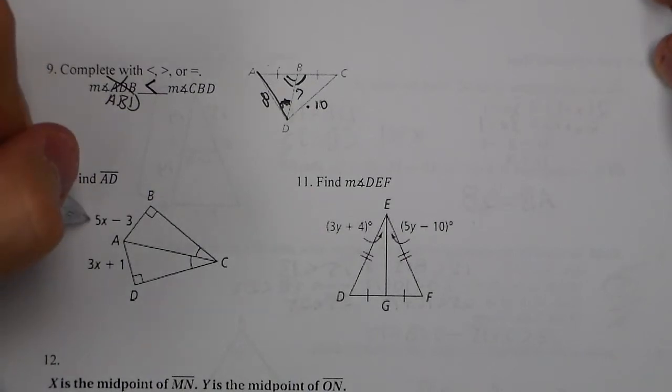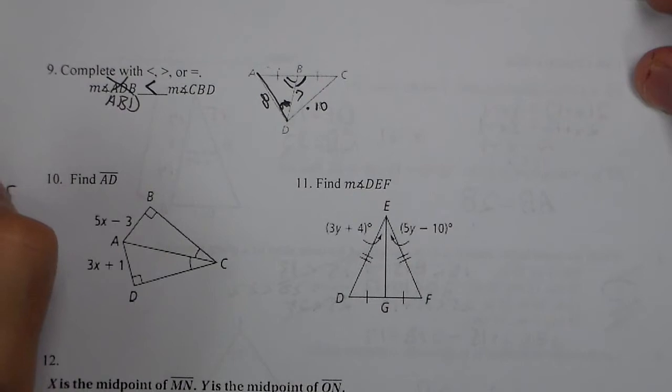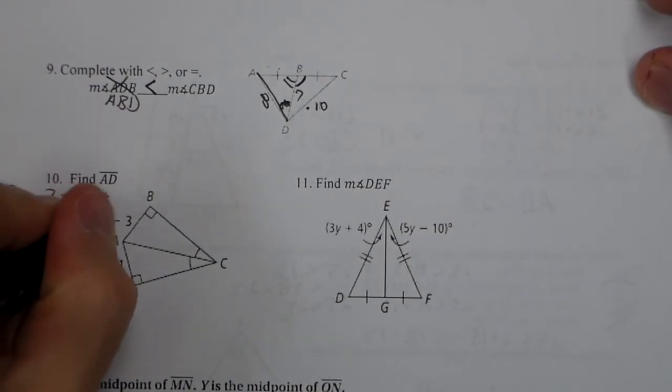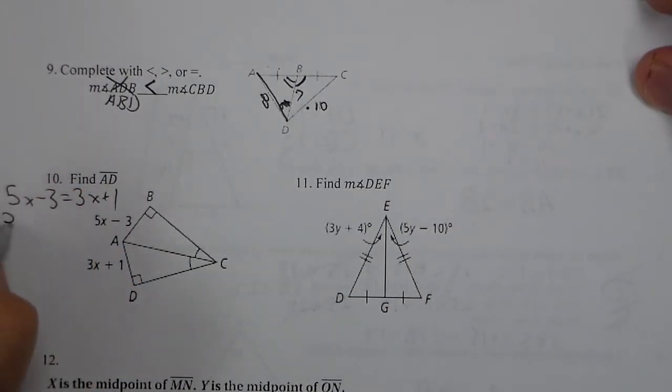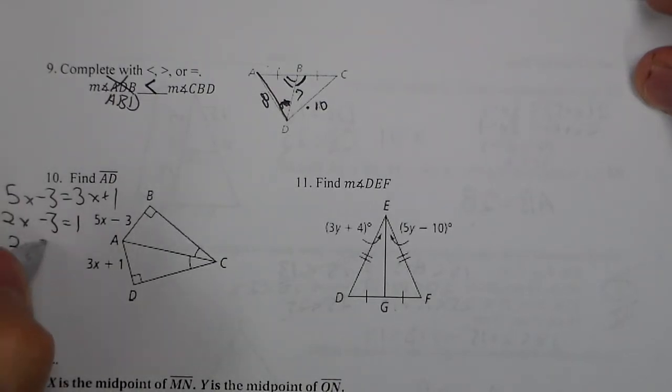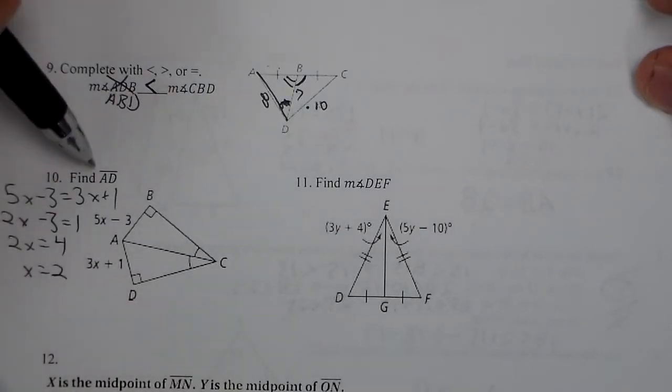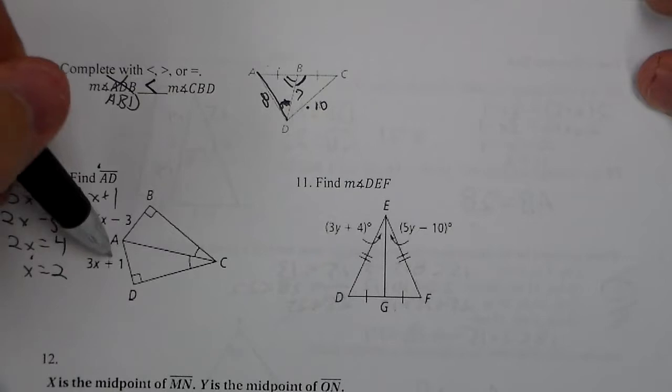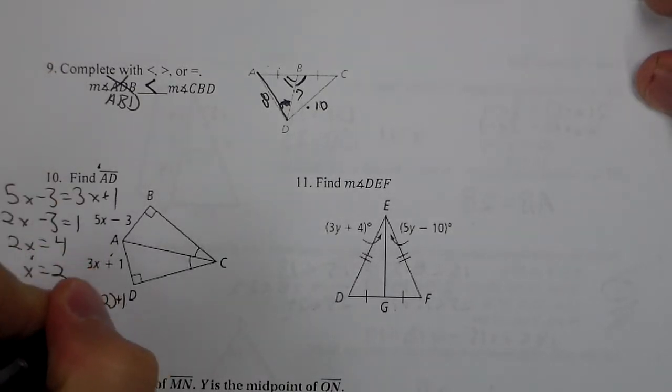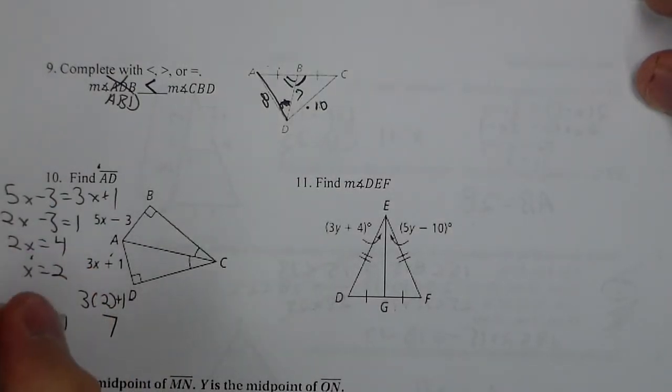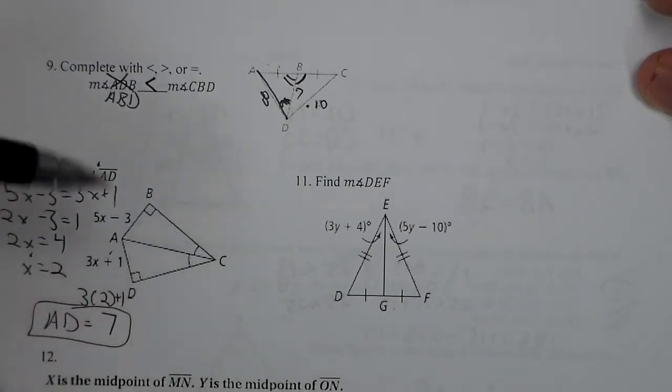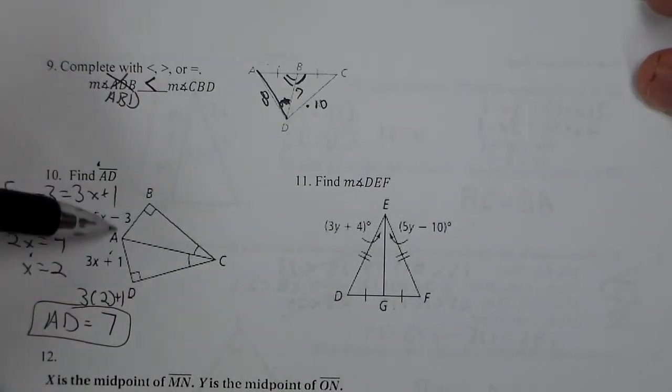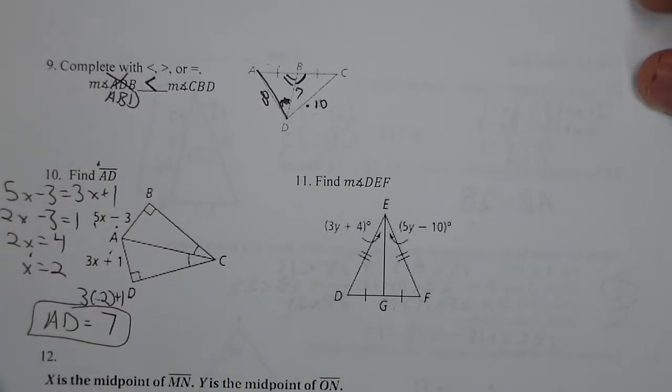For number 10, they are an angle bisector I'm looking at. I'm going to set these two equal. It's like looking at congruent triangles with corresponding parts. So I solve, subtract 3X. I get 2X on that side. Add 3 over. I get 2X equals 4. So X is 2. But we don't stop because we're actually looking for the side. I plug 2 into AD. 3 times 2 plus 1 gives me 7. So the length of AD is 7. We can check real quick. 2 times 5 is 10 minus 3 is 7. So that does match. It should.